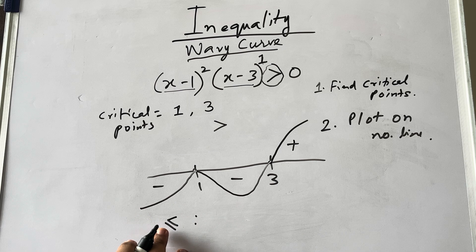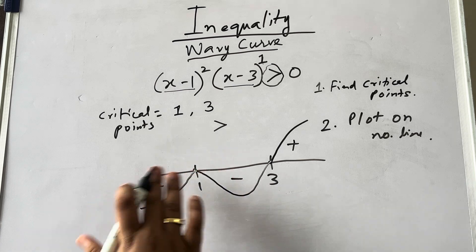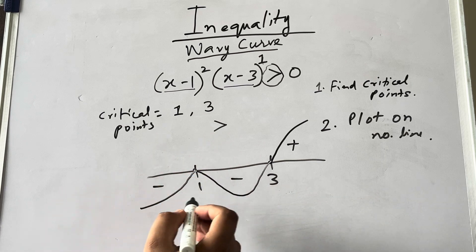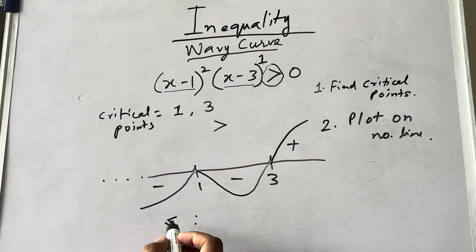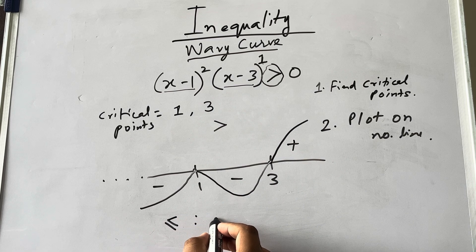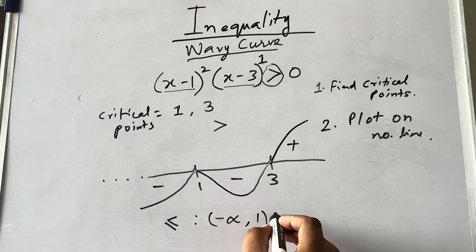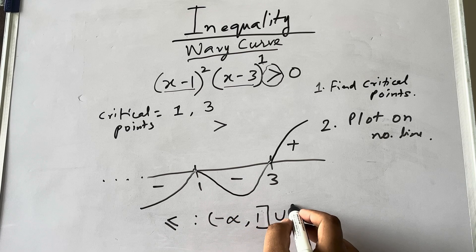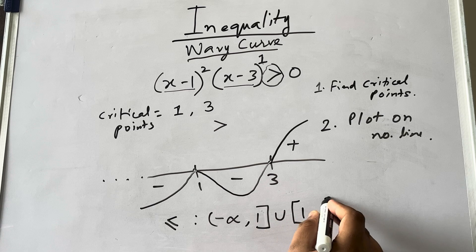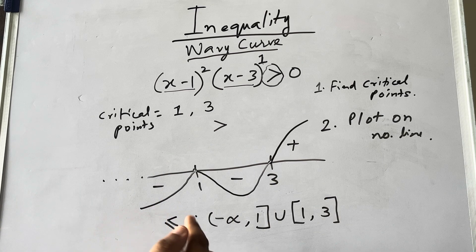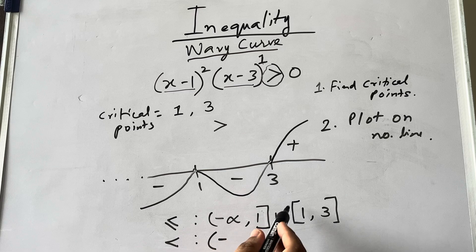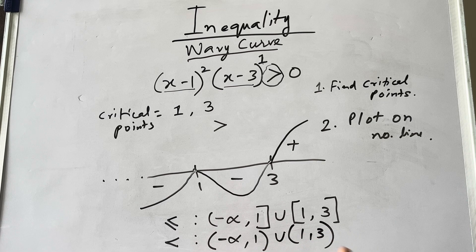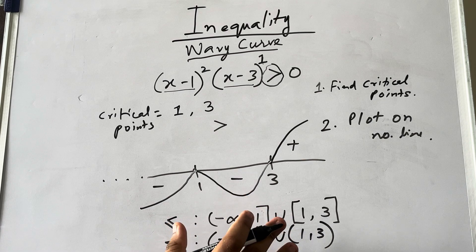If it were less than or equal to, you would take: x ∈ (−∞, 1] ∪ [1, 3]. If the sign were strictly less than (no equal to), there is no change except the brackets become open: x ∈ (−∞, 1) ∪ (1, 3). Both endpoints are not included, but values in between are included. So this becomes the solution of (x − 1)² × (x − 3)¹ > 0.